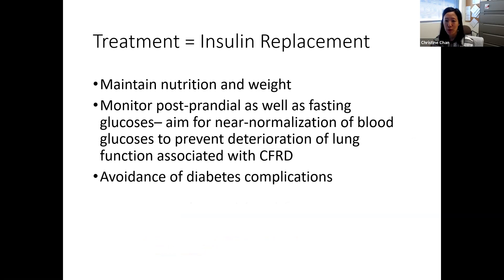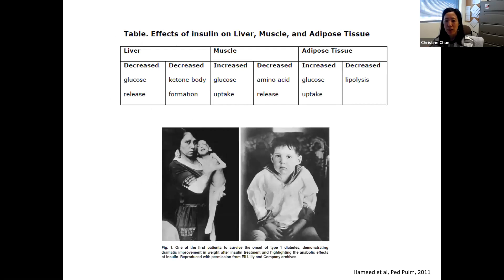What is the treatment for CF-related diabetes? It's insulin replacement. The goals of therapy are to maintain nutrition, maintain weight, and monitor not just fasting blood sugars but also post-meal blood sugars. As best as possible, trying to normalize those blood glucoses to prevent deterioration of lung function associated with CF-related diabetes and to avoid long-term diabetes complications. This old picture shows the striking anabolic, growth-promoting effects of insulin — one of the first patients with type 1 diabetes to receive insulin treatment. Insulin was only developed as a therapy in the 1920s. Prior to that, if you had type 1 diabetes and made no insulin, that was a death sentence.